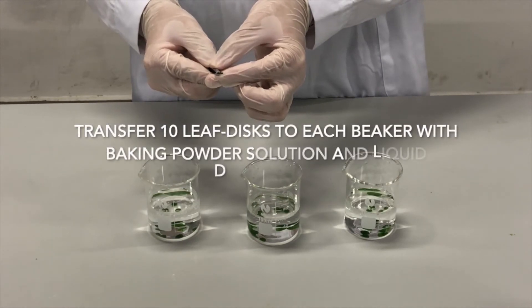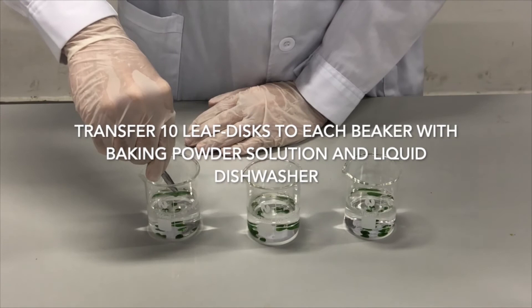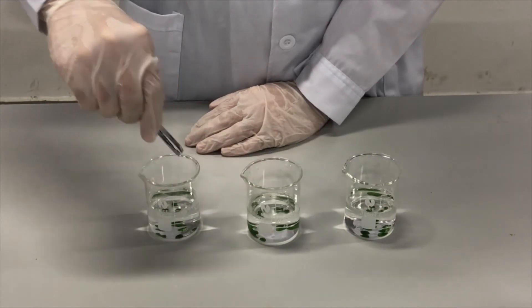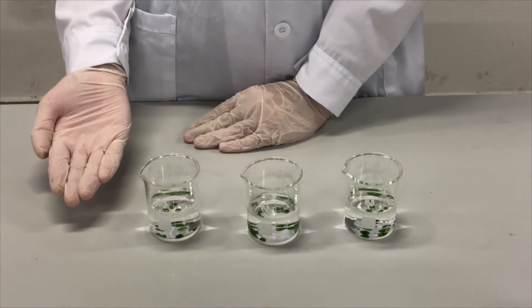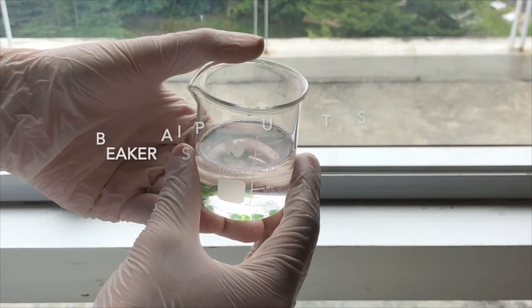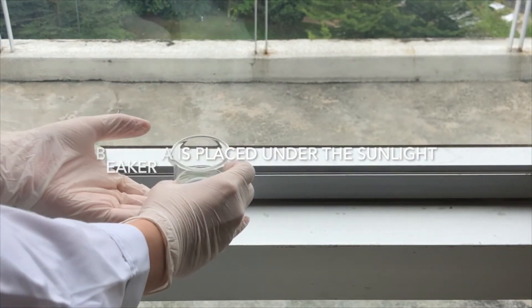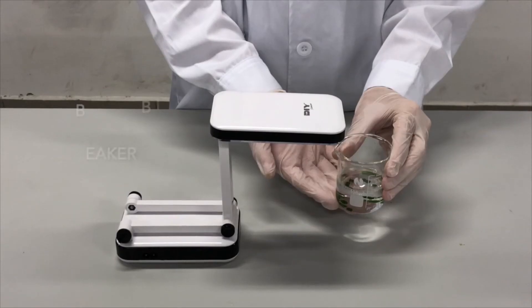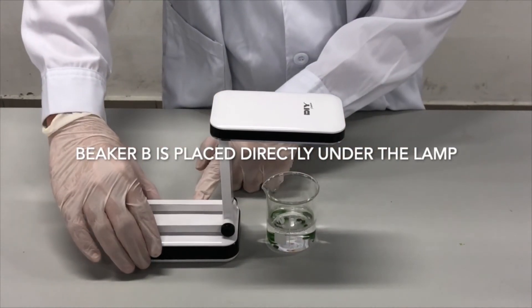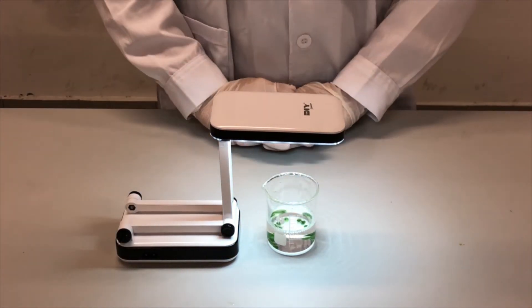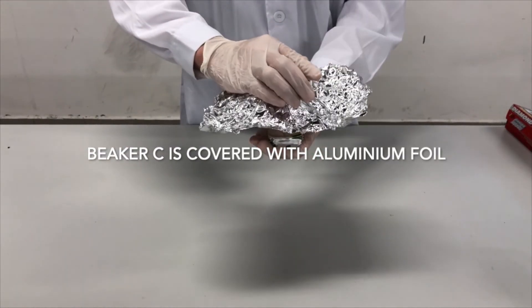Use tweezer to transfer 10 leaf disks to each beaker with baking powder solution and liquid dishwasher until it is enough to cover the leaf disk. Beaker A will be placed under the sunlight. Beaker B will be placed directly under the lamp. Beaker C will be covered with aluminum foil.